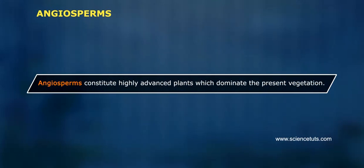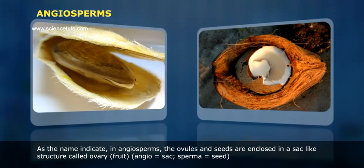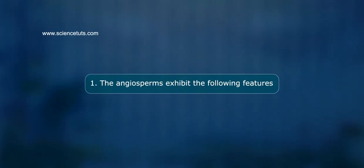Angiosperms constitute highly advanced plants which dominate the present vegetation. As the name indicates, in angiosperms the ovules and seeds are enclosed in a sac-like structure called ovary — Angio means sac, Sperma means seed. The angiosperms exhibit the following features.